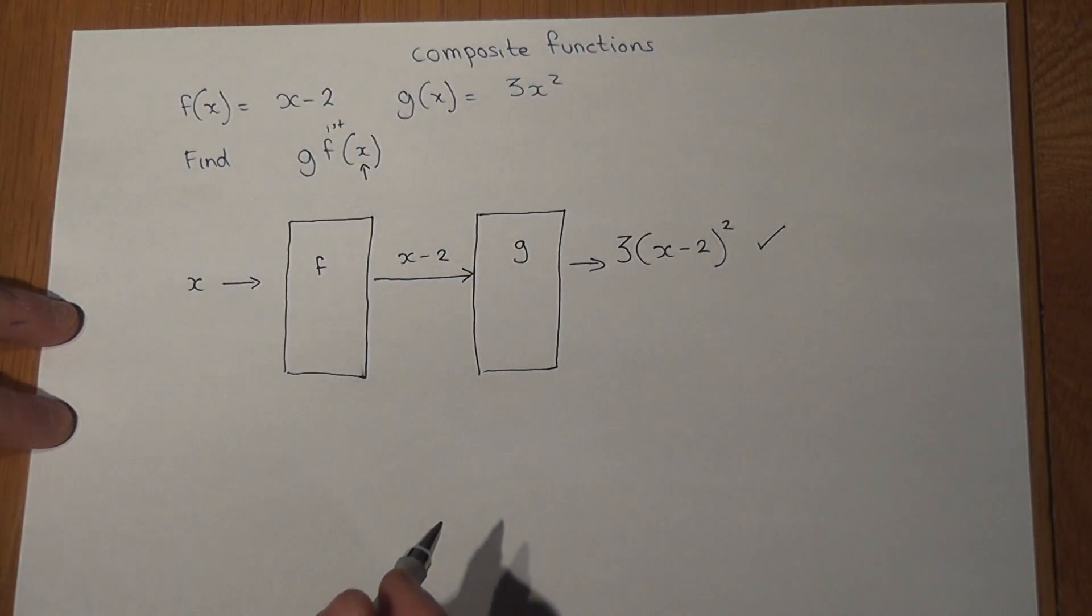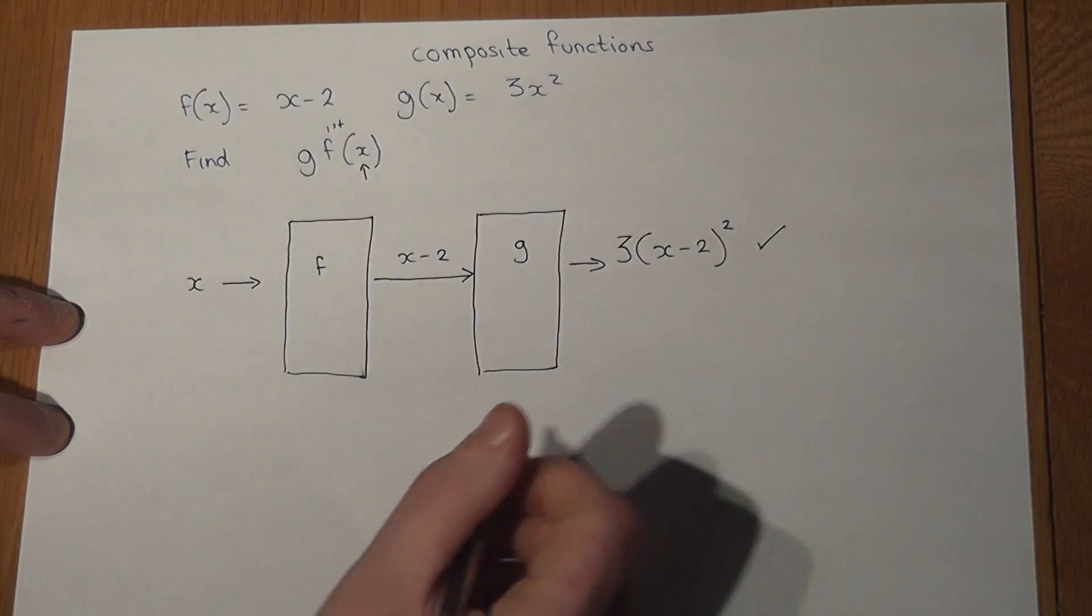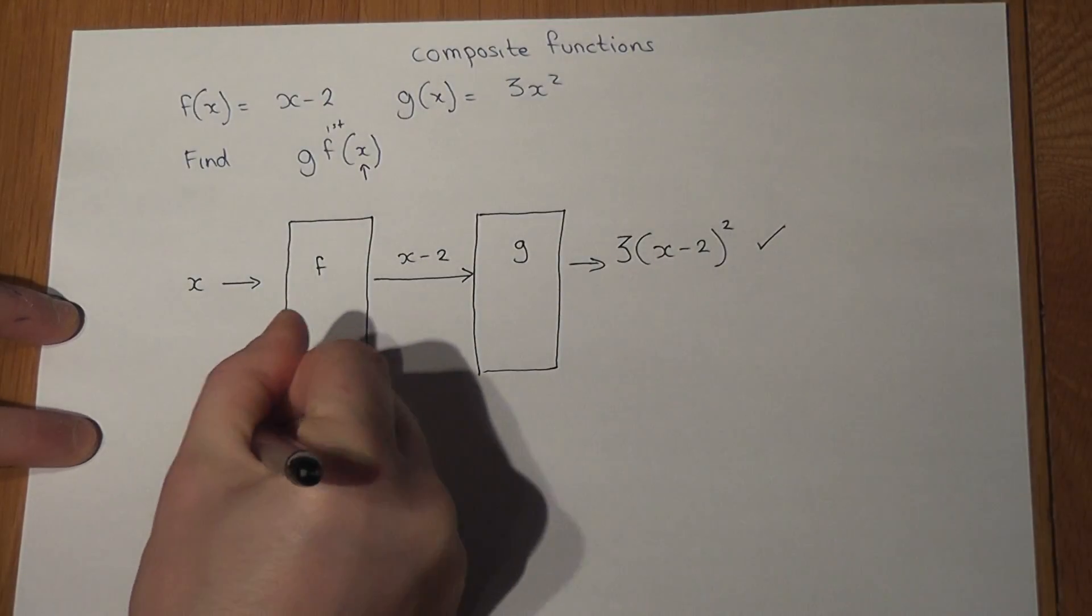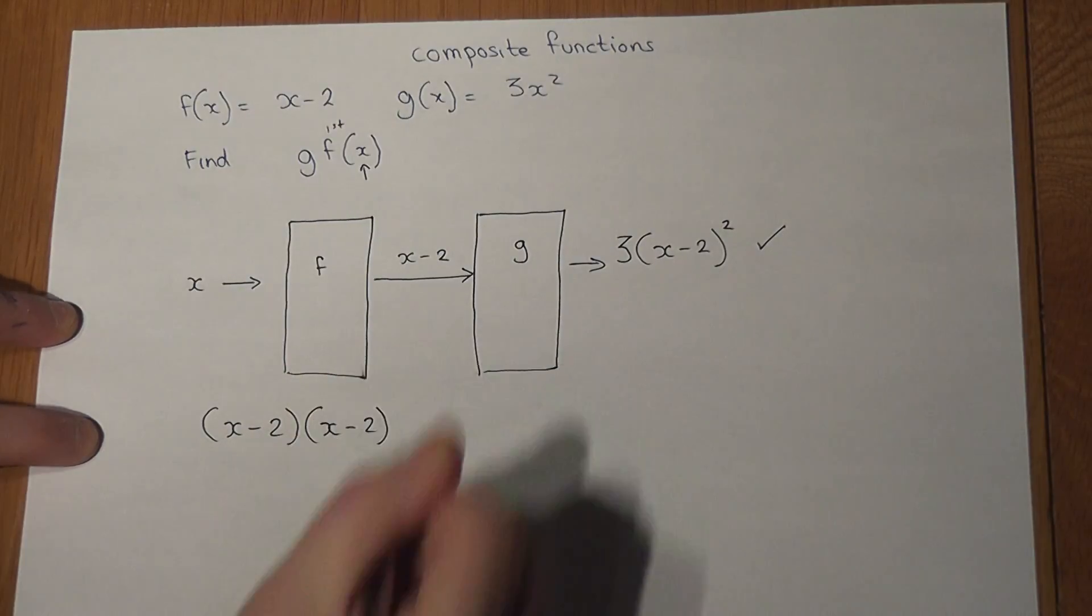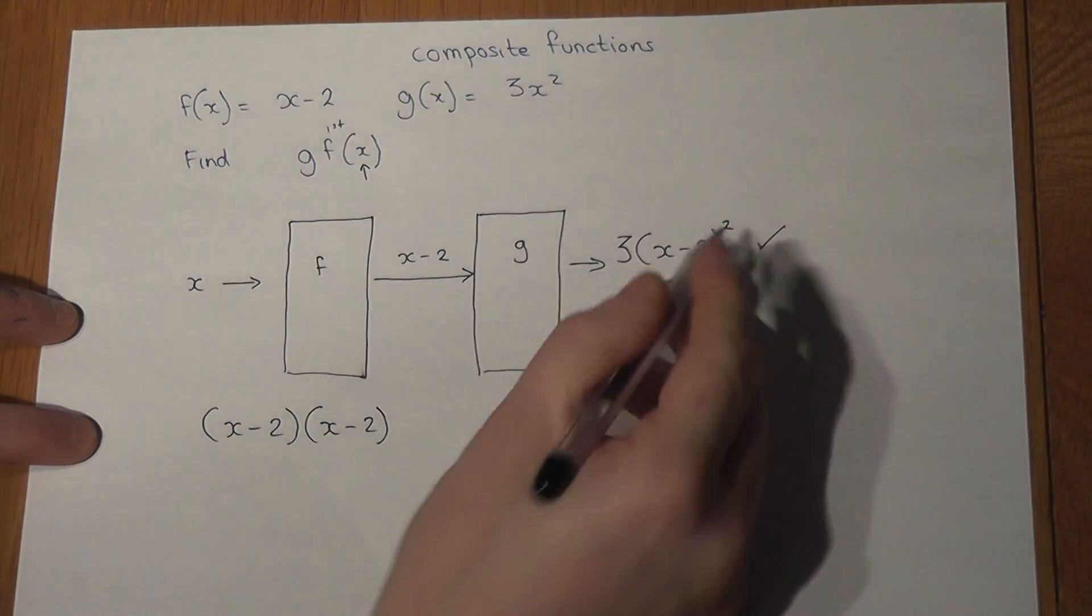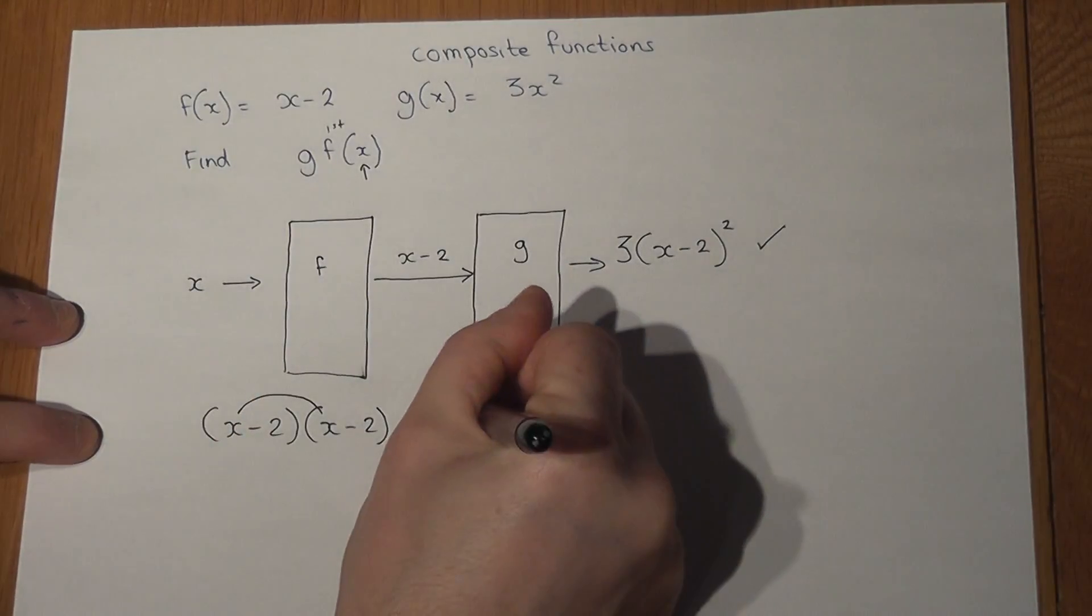us to expand and simplify. So as a revision, to expand brackets like this, we expand the x minus two squared first of all by looking at it as double brackets. x times x is x squared,